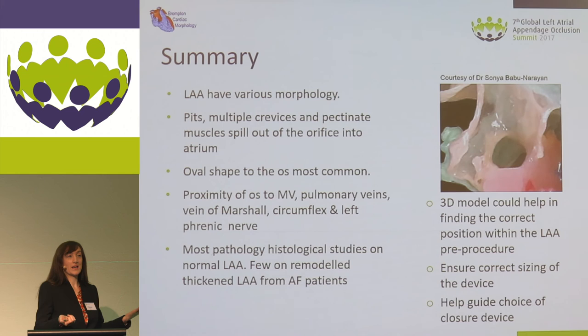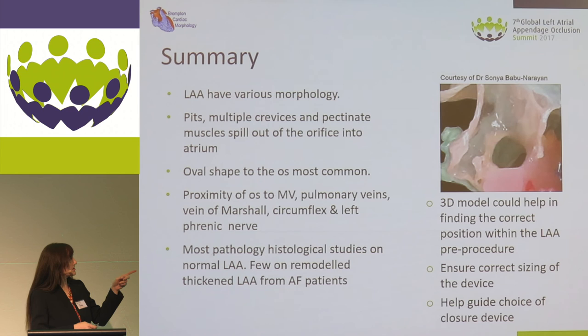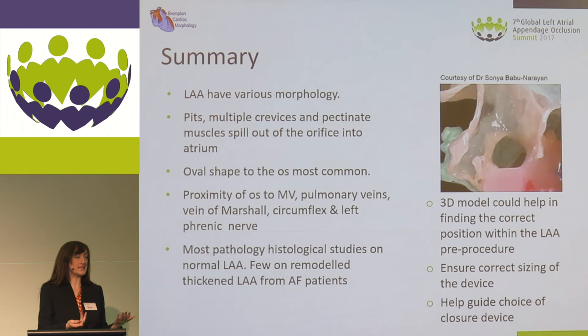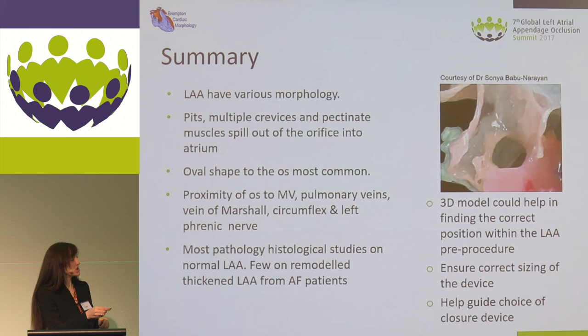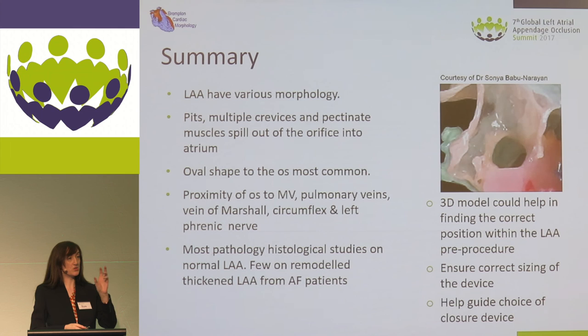So my final slide. As we know, the left atrial appendage has a huge variation in morphology. There are multiple pits and crevices, particularly at the os itself. We can see the proximity of the appendage to all the other important cardiac structures. With CT and MRI scanning, we can now make our own 3D prints of the heart — this image shows a heart and I'm just showing you the os of the appendage. Potentially we can use this 3D printing — you don't need to print the heart itself, just use the digital model — and that could be used to identify the morphology of the appendage prior to seating your device. Thank you very much.